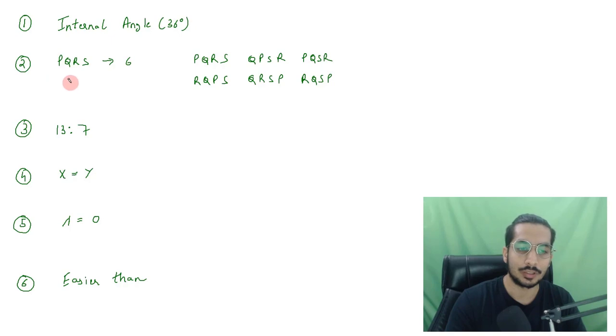Then, there was a question that S has to always be on the right and P and R cannot be adjacent to one another. So, how many arrangements we can have? For this question, the answer was 6 arrangements. These are the 6 arrangements that I've written down over here.